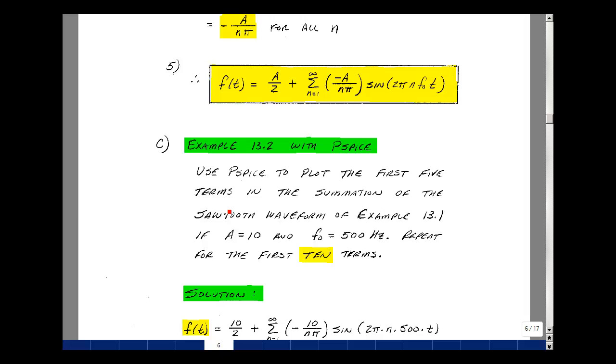Let's use PSPICE to plot the first five terms in the summation of the sawtooth waveform that we just have above. If our value of a is equal to 10, and f0 is equal to 500 hertz. Let's repeat this for doing the first 10 terms.